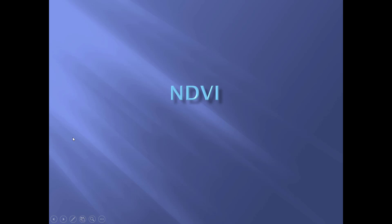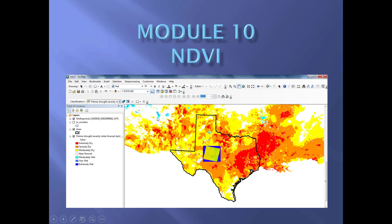This is the recording for Module 10 on NDVI from the workbook Making Spatial Decisions Using GIS and Remote Sensing. This is an ArcGIS session showing you what your project will look like, and we're working in Texas.